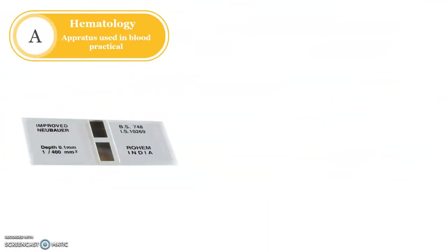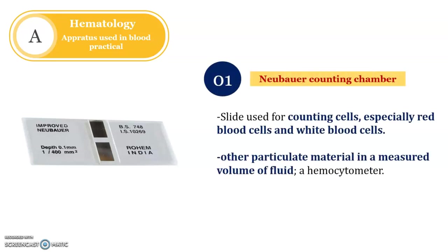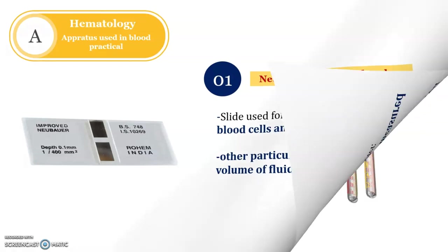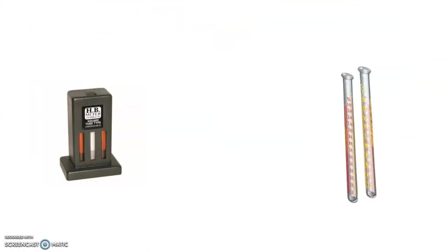Now let us discuss the first spot. Pause this video, think about what is shown on screen, and write the name in your notebook. The first spot is the Neubauer counting chamber. This is generally used for counting blood cells like RBCs and WBCs, and is also useful for counting other particulate material. It helps to recognize the different cells of the blood.